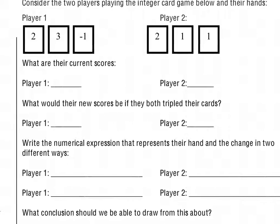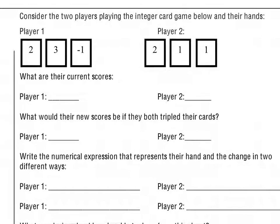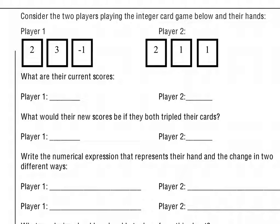We have two players in the NinjaGuard game. This one looks a little different. The players have cards 2, 3, and negative 1, and 2, 1, and 1. Go ahead and find their current scores. We have 2 plus 3 plus negative 1, which gives us 4, and 2 plus 1 plus 1, which also gives us 4.